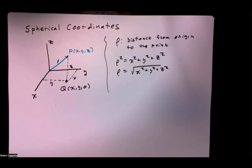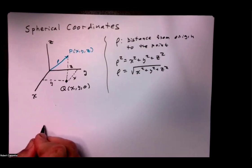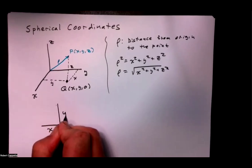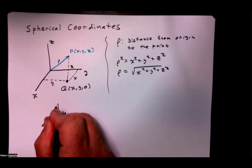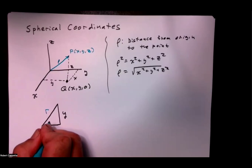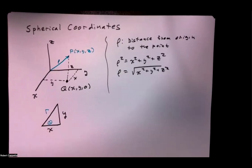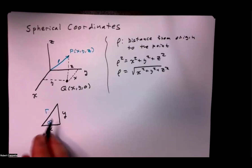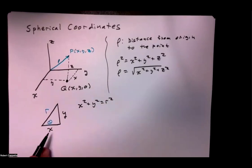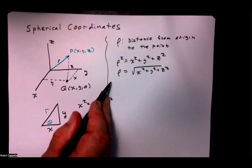Now we see the point x, y, 0 and I want to draw in what R would be. If this is x and this is y, what are R and theta? We know from previous work with polar coordinates and cylindrical coordinates — here's R and here's theta. Certainly x squared plus y squared equals R squared.